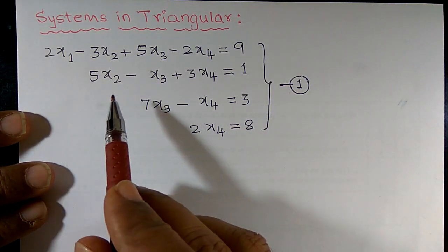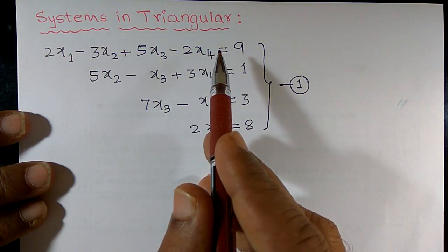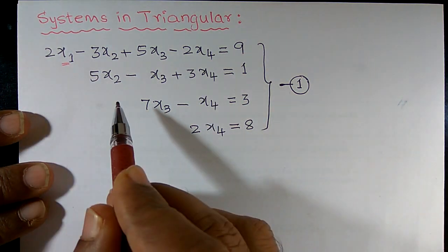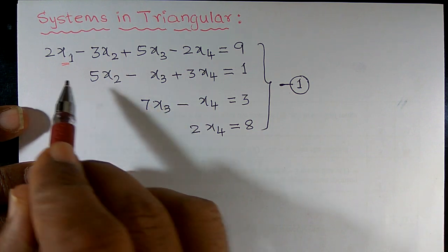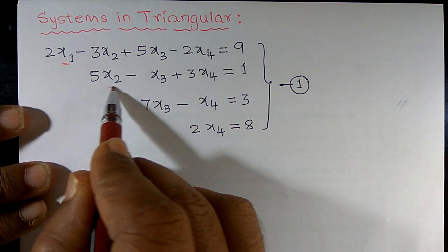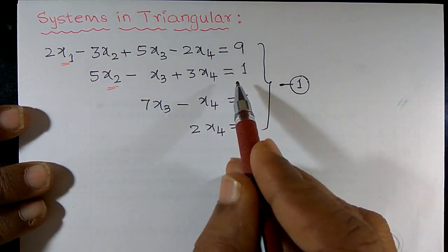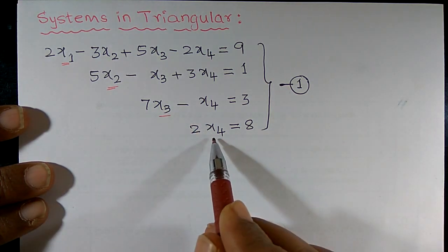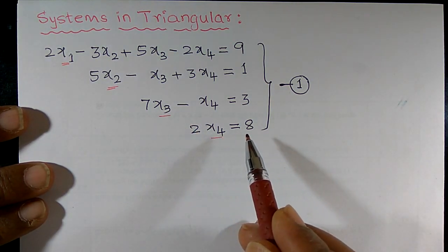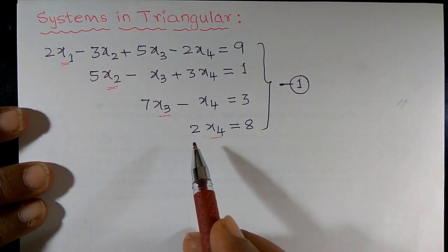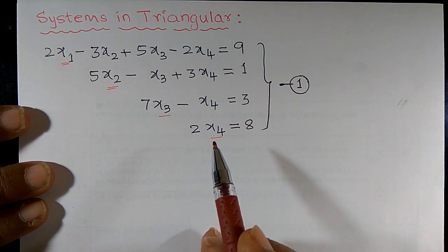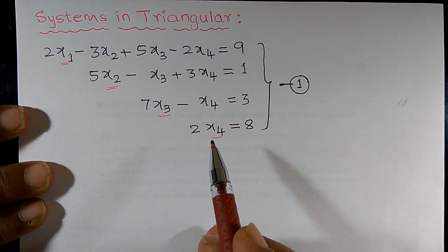Friends, the given system is called a system in triangular form. For example, x1 is the leading unknown in the first equation, x2 is the leading unknown in the second equation. Similarly, x3 is also a leading unknown, and x4 is also a leading unknown. They have given a system that is square.